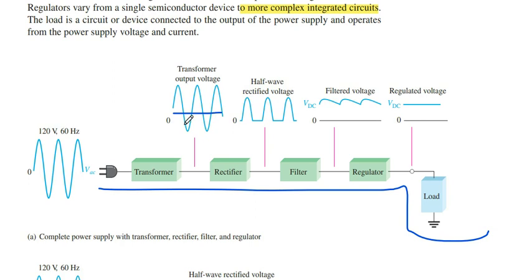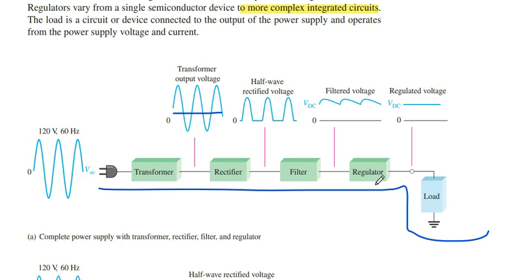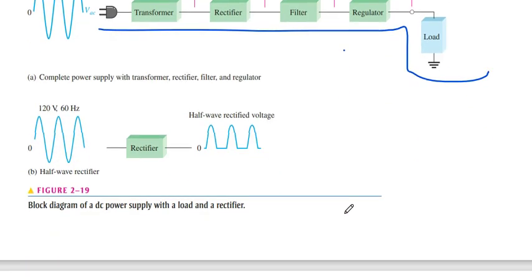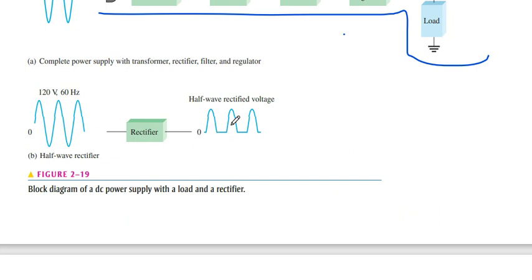With a half wave rectifier, it loses the negative part and gives only the positive half — therefore this is called a half wave rectifier. Then we use a filter circuit to smooth the waveform, then a regulator to get pure DC, and finally we apply a load. We will discuss all these things one by one.